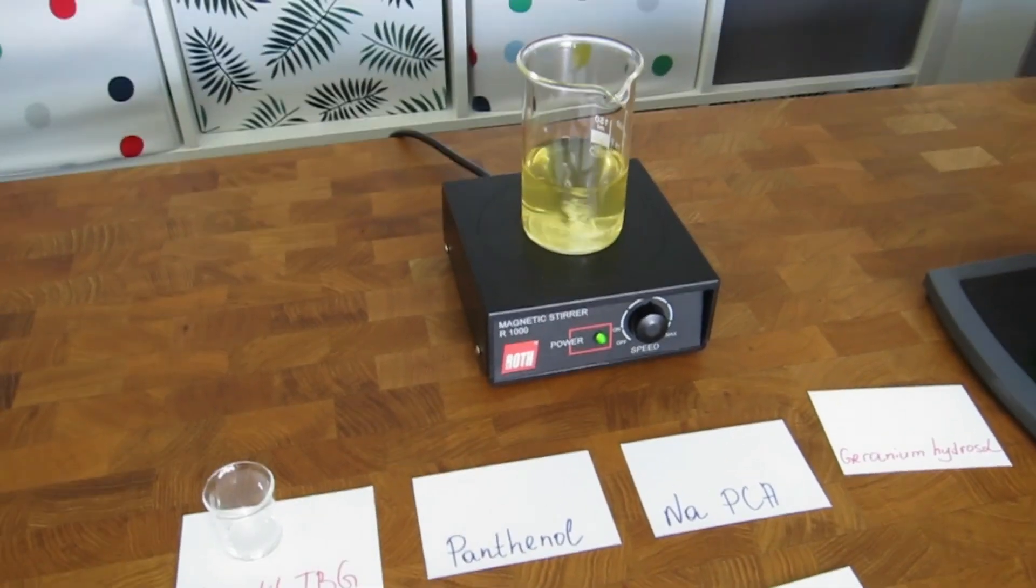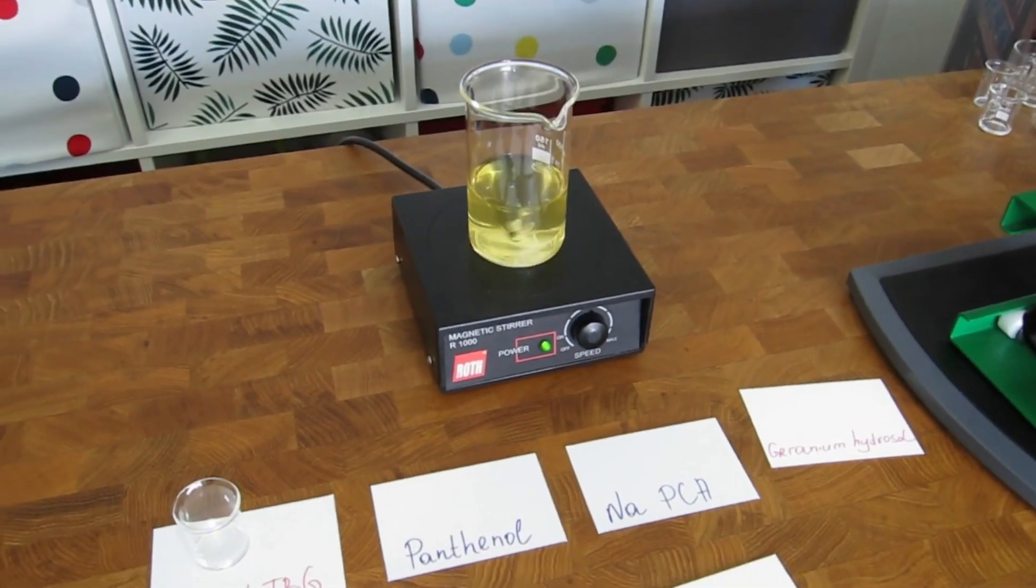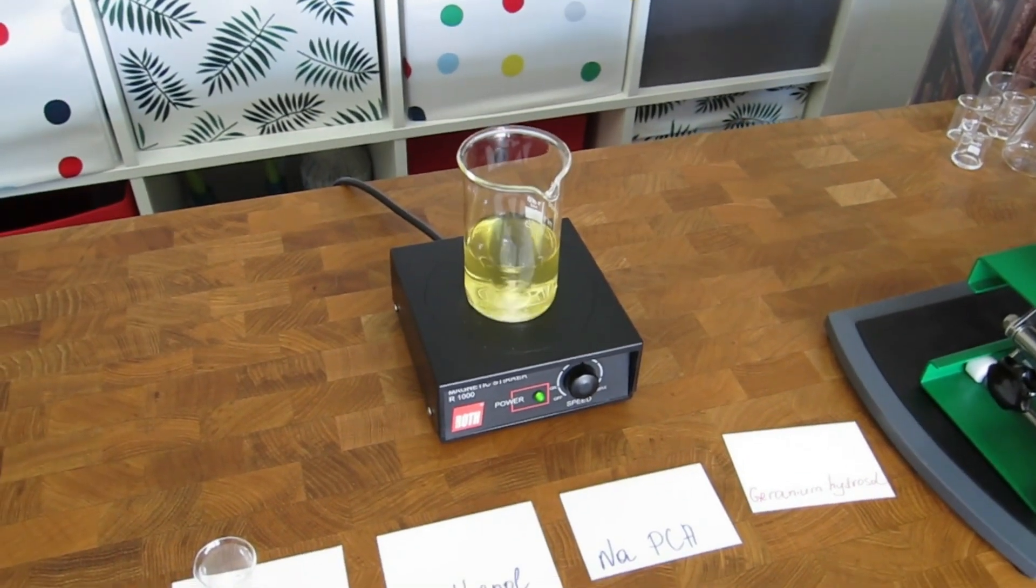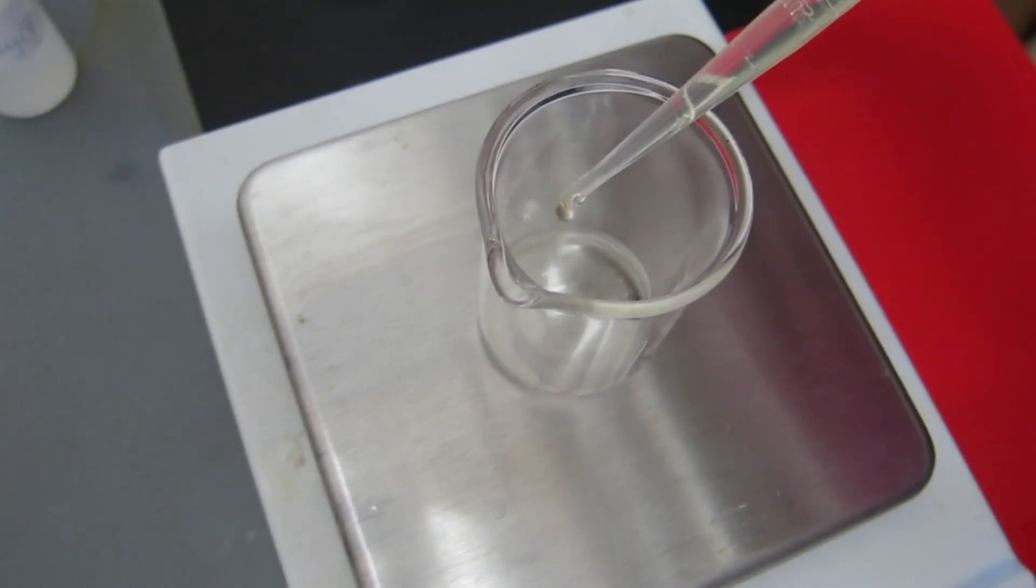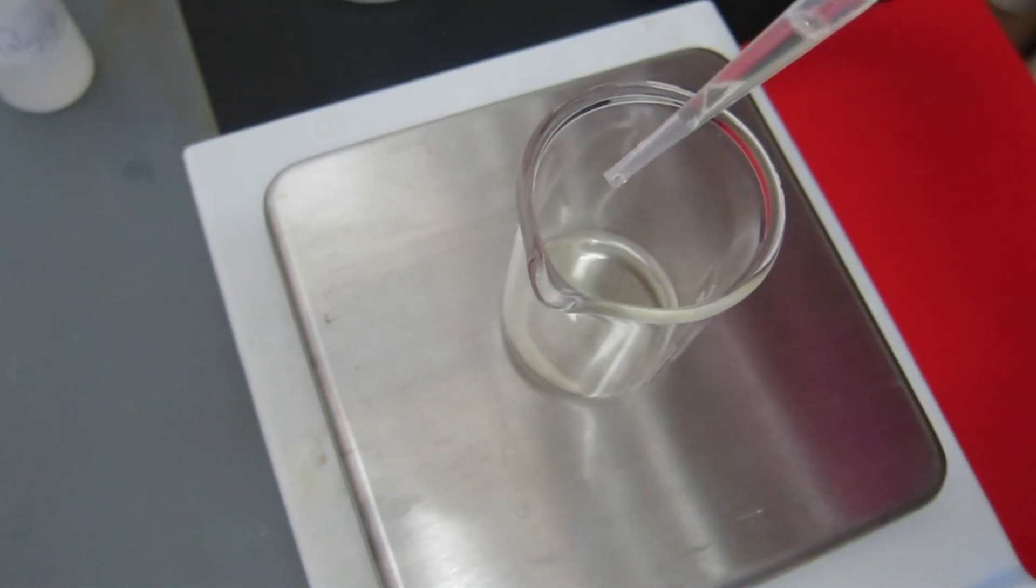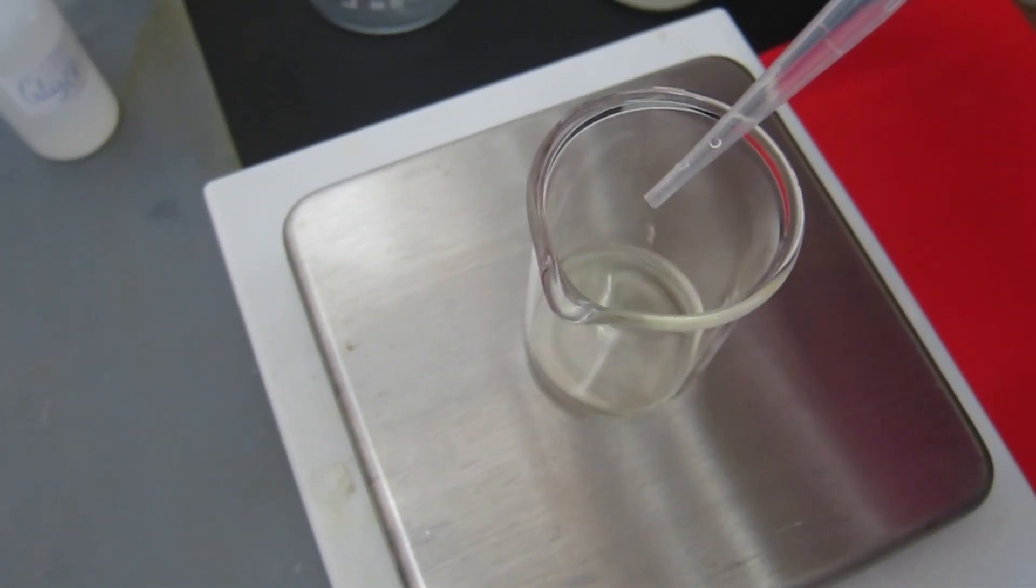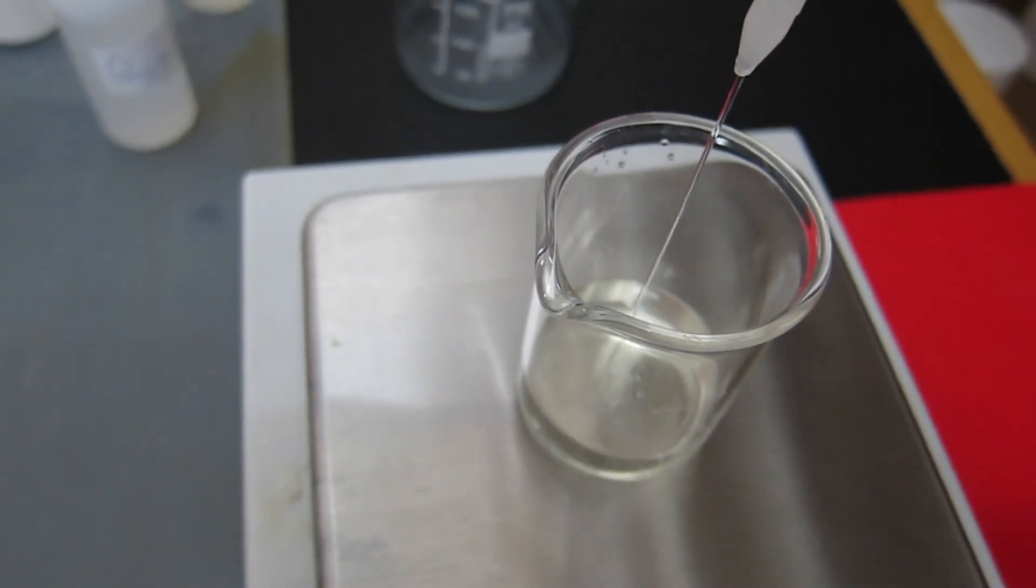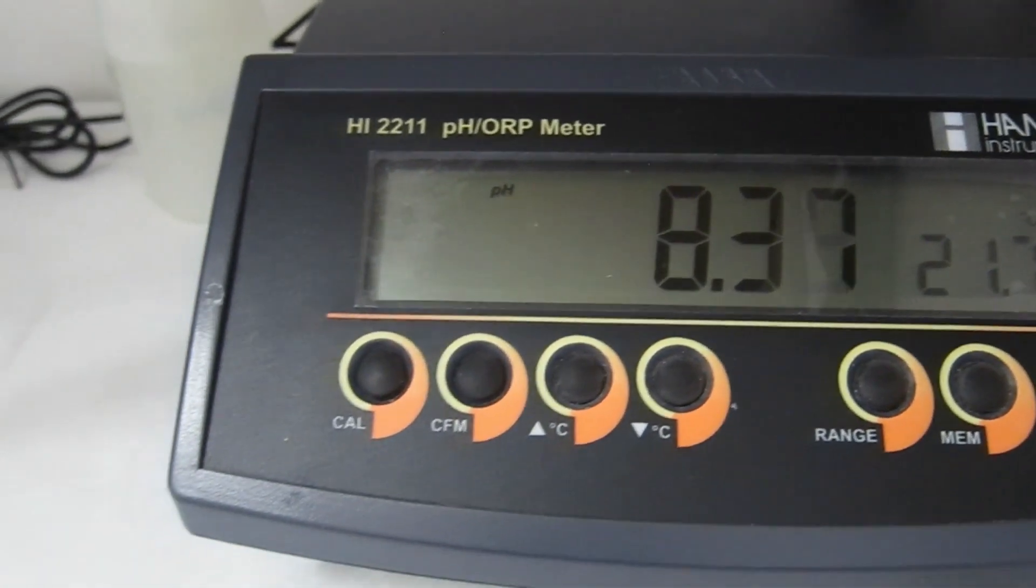When the water phase is completely blended and smooth, we can move on to making the dilution and measuring the pH. Prepare a 10% dilution of the water phase in distilled or deionized water and then measure the pH. We have already calibrated the electrode.